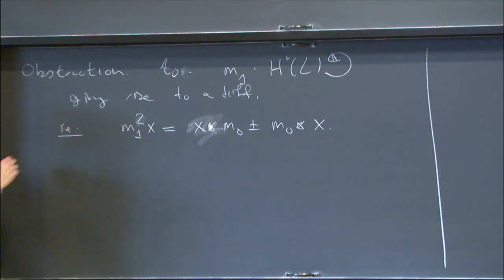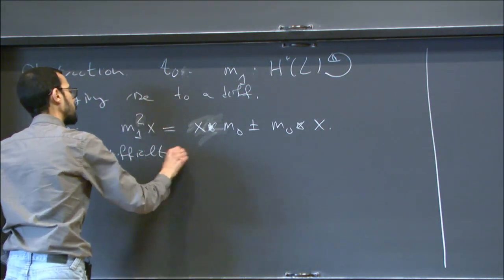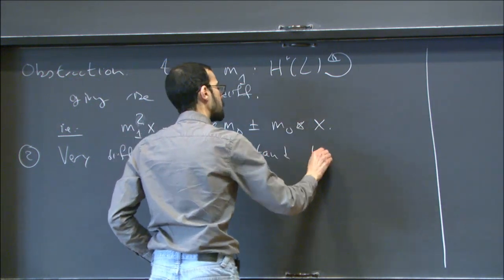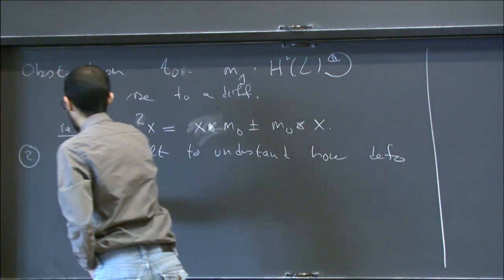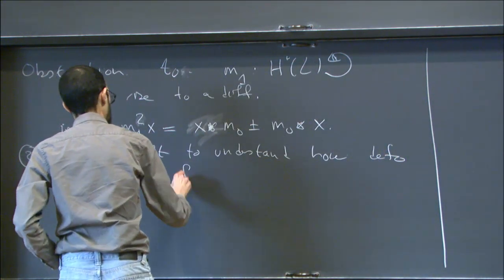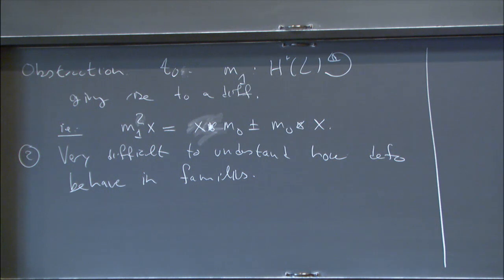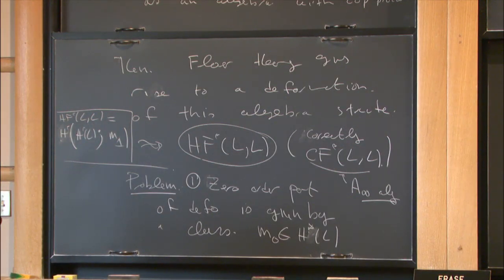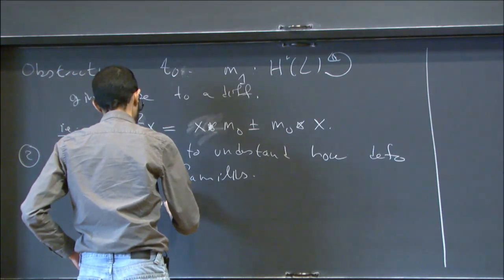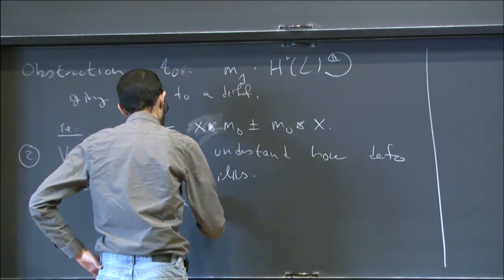The second problem is that it is very difficult to understand how these deformations behave in families. The correct version of families here is not Hamiltonian families — because with a Hamiltonian isotopy the deformation is locally constant — but rather non-Hamiltonian families. These are the two essential problems.